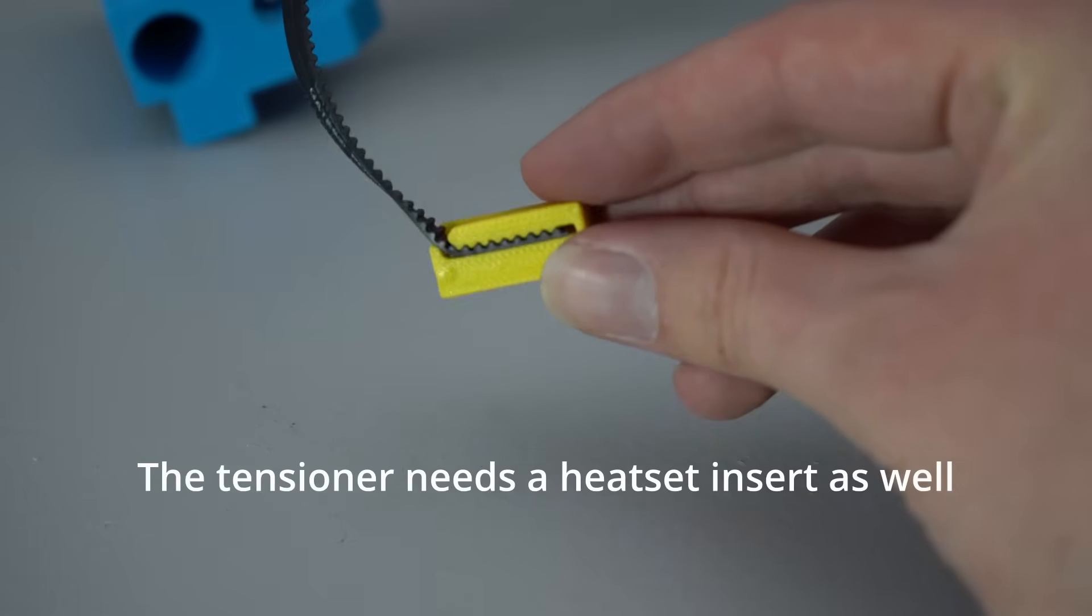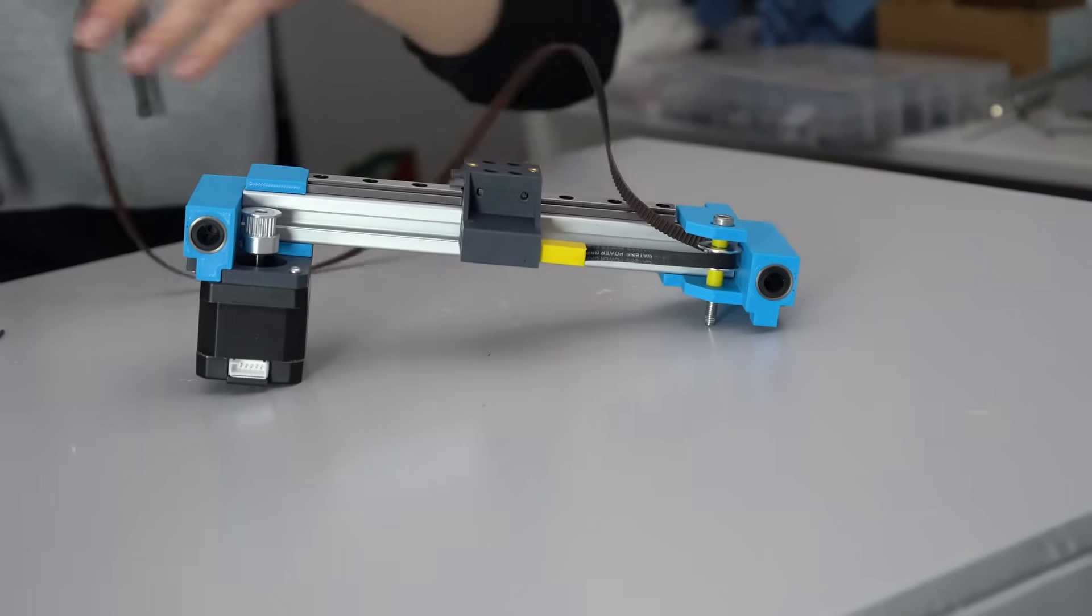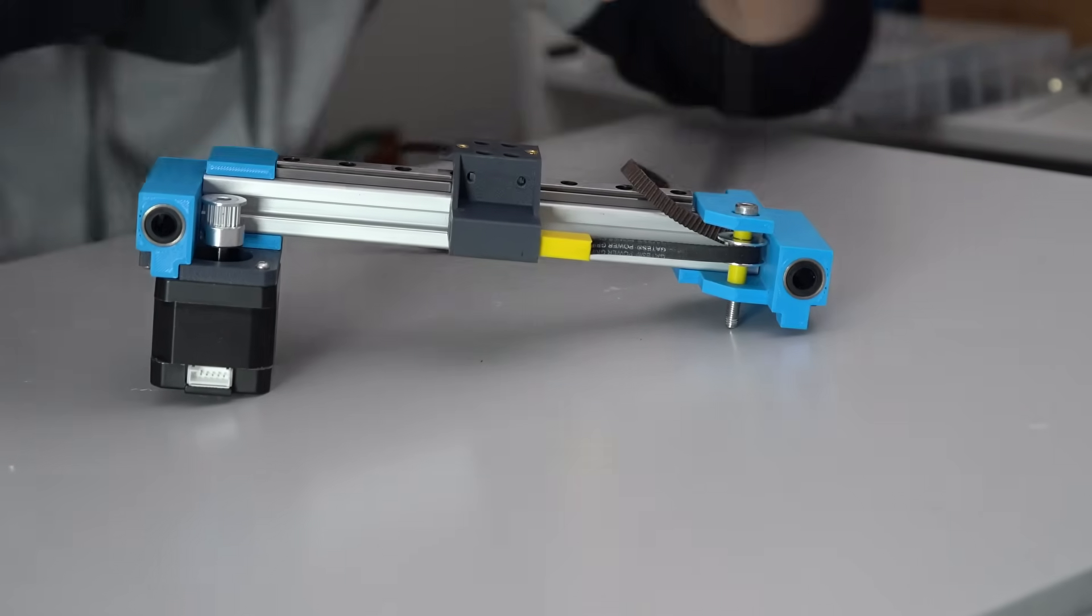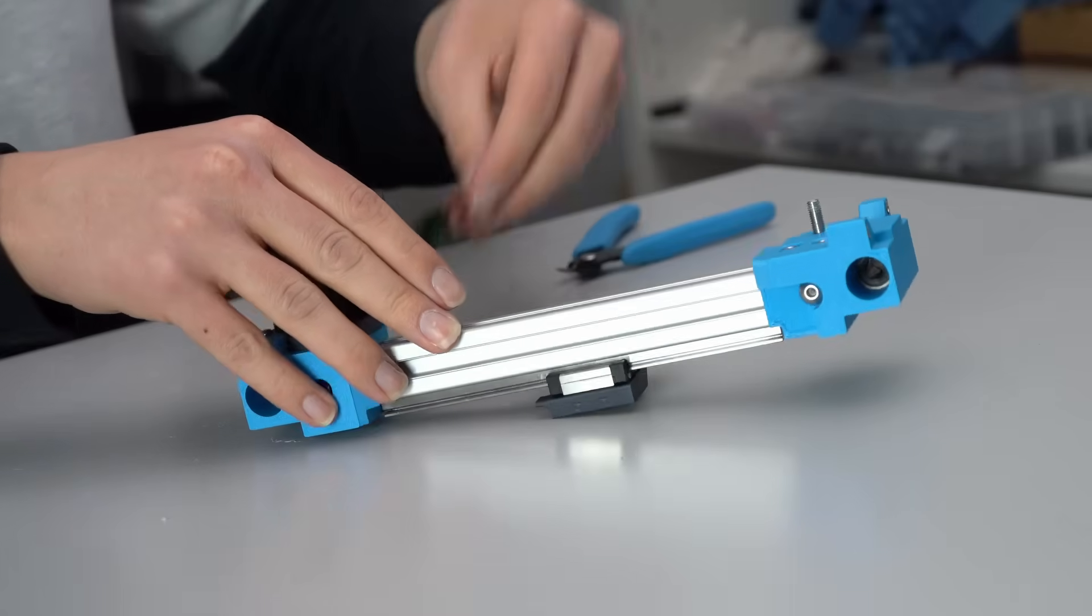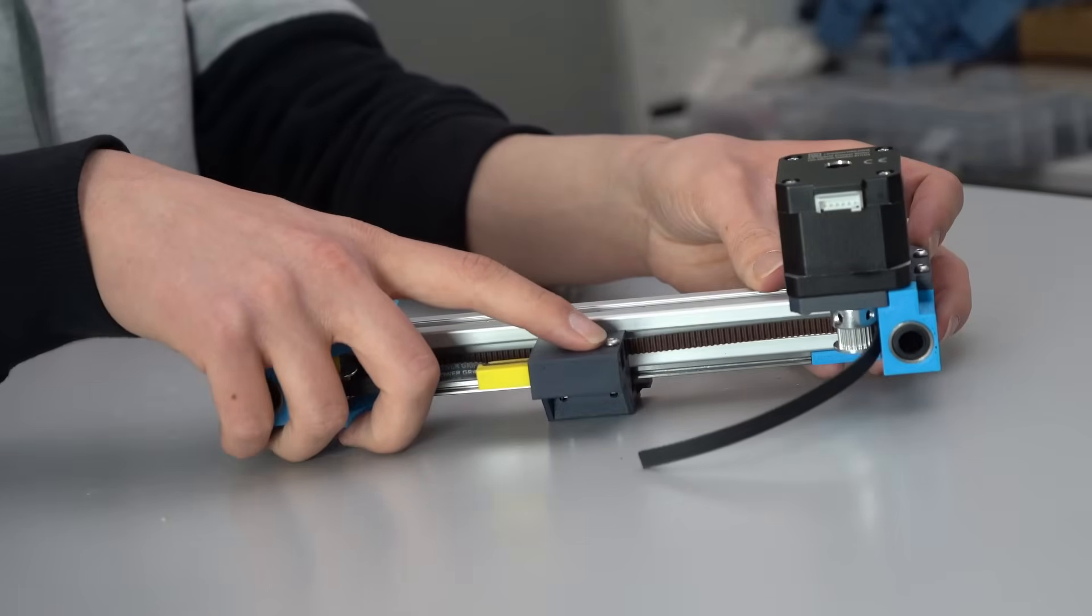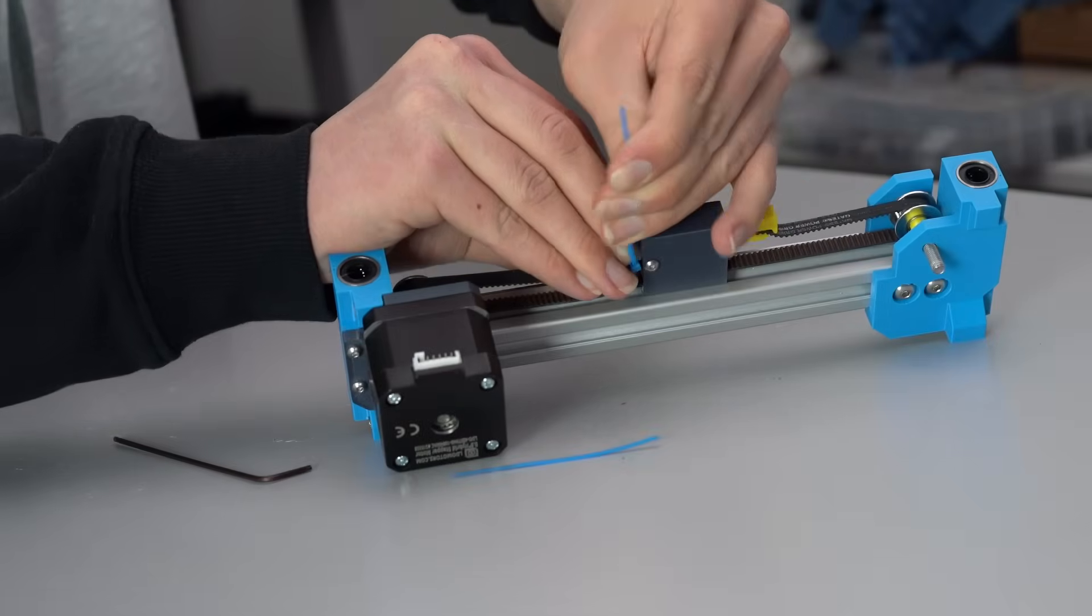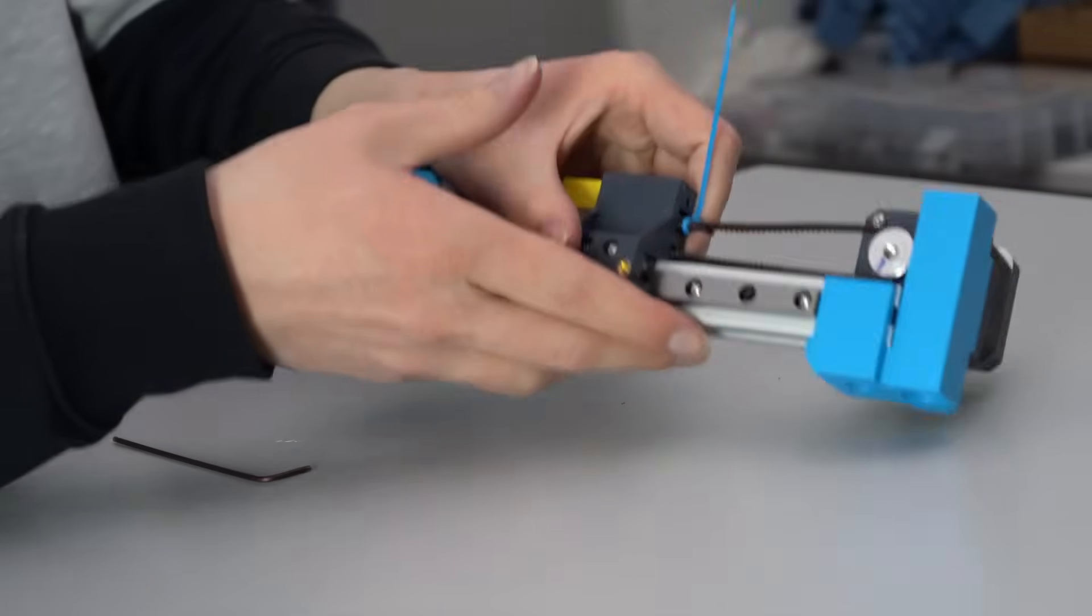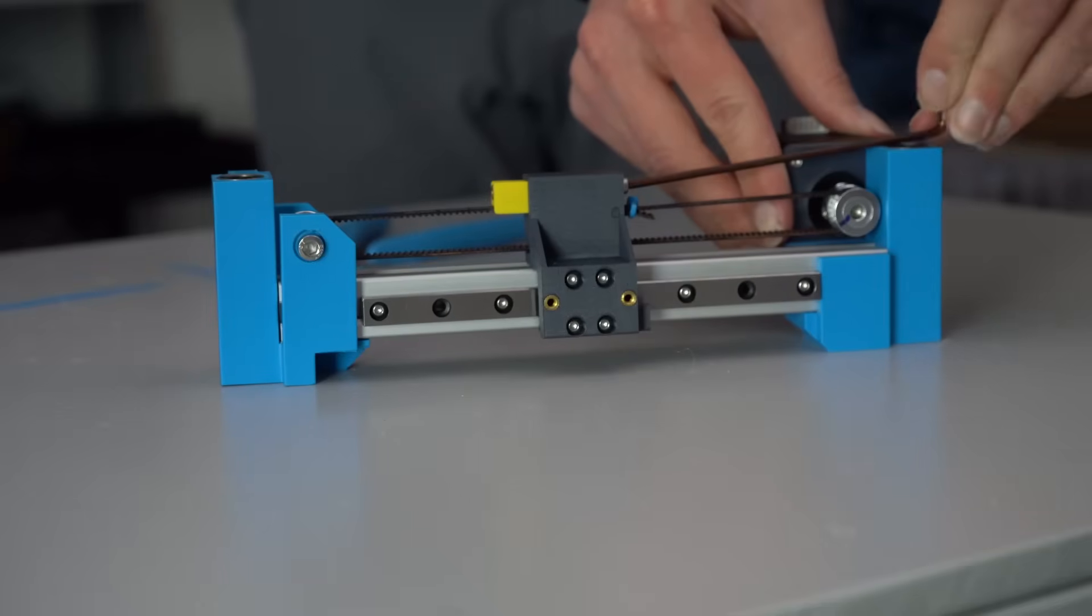Running the belt on X is a lot easier than on Y. Just insert the belt into the tensioner, push that part through the X-carriage, and run the belt all the way around. And for the other end of the belt, you simply just make a loop, and then insert a screw through that loop here on the carriage, and then carefully wrap a zip tie around the belt to secure it.